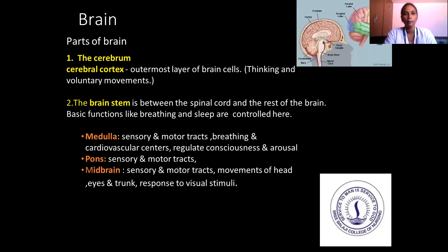Parts of the brain: the cerebrum, with the cortex as the outermost layer of the brain cells, deals with thinking and voluntary muscles. The brain stem is between the spinal cord and the rest of the brain; basic functions like breathing and sleep are controlled here. The medulla handles sensory and motor tracts, breathing and cardiovascular centers regulating consciousness and arousal.